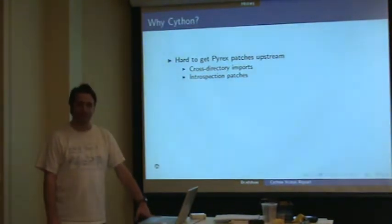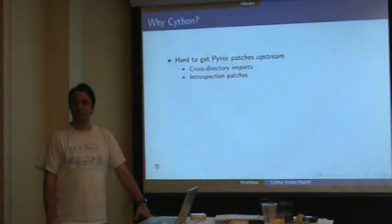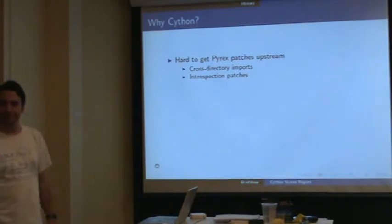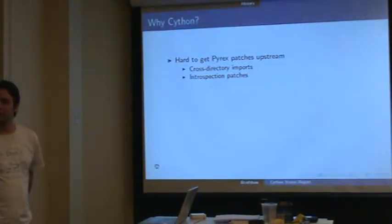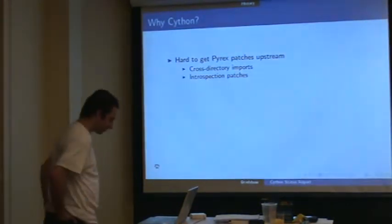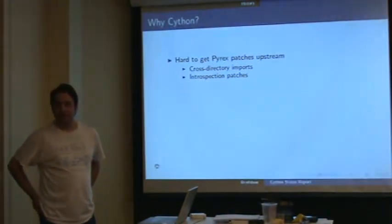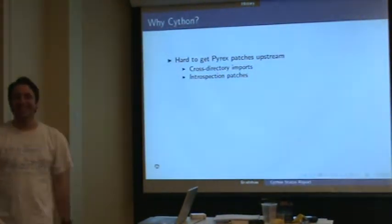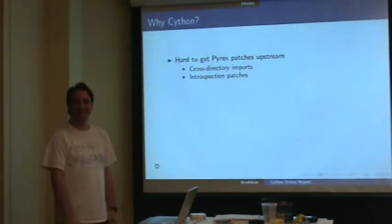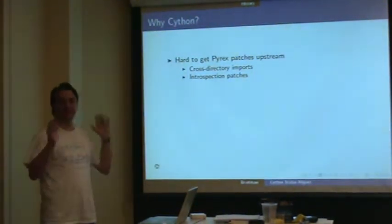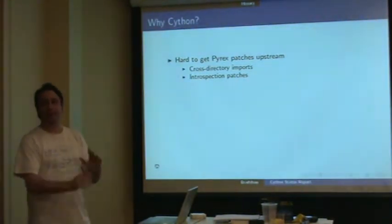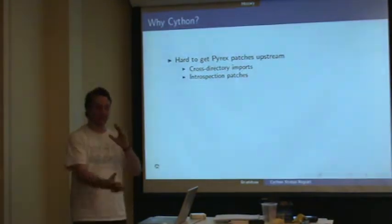There's a difference between public domain and asserting copyright — you can withdraw a license to do anything. The reason we chose the Python license is we're hoping Cython will get included in Python, and we don't want headaches trying to change the license later on.